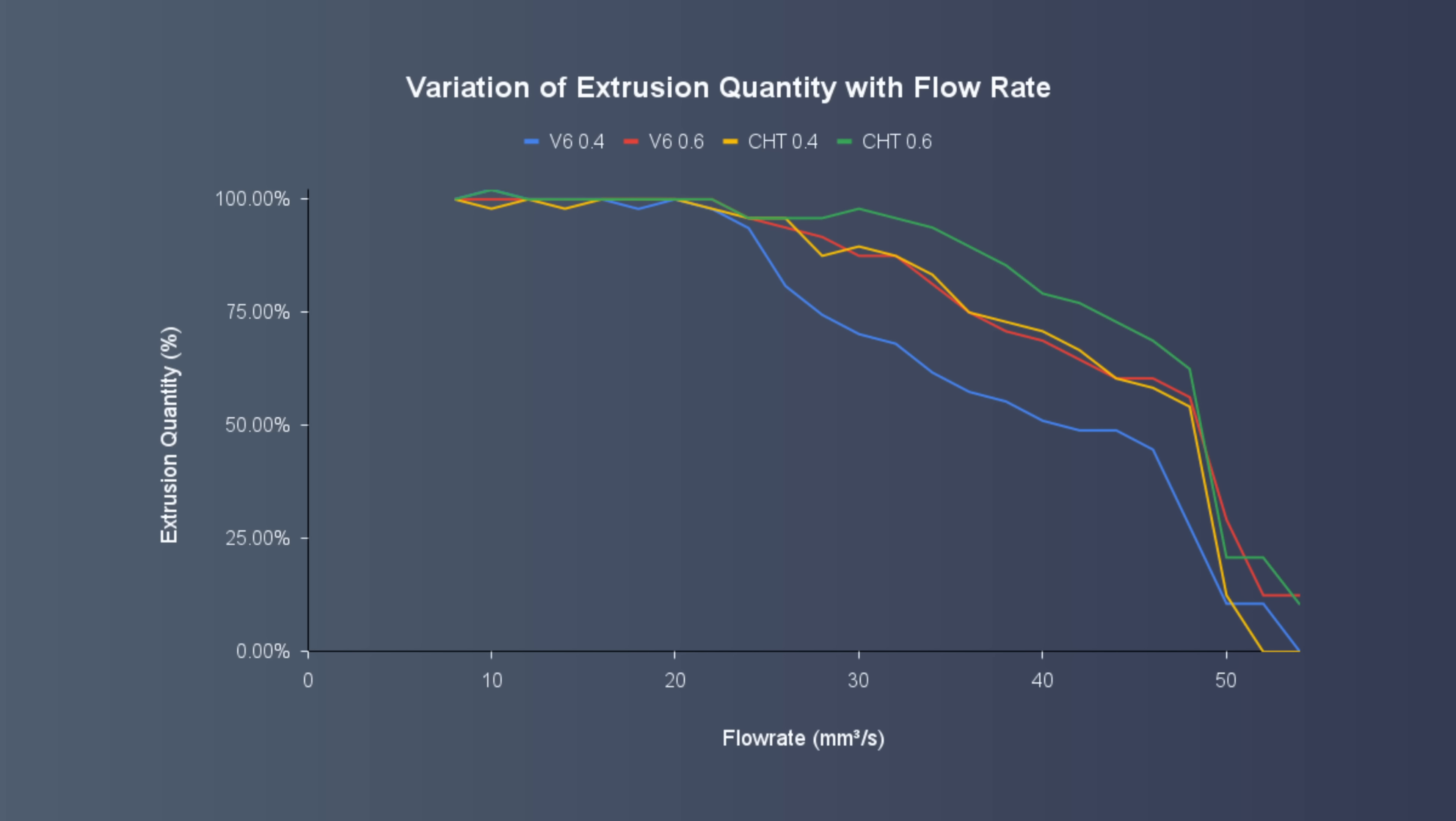If we add in a comparison to CHT nozzles you can see that the internal geometry on an otherwise fairly similar nozzle can have quite a big effect on what flow rate can be achieved before getting under-extrusion. The 0.4mm CHT is similar to a standard 0.6 and the CHT 0.6 gets to around 30mm cubed per second before having any significant issues.